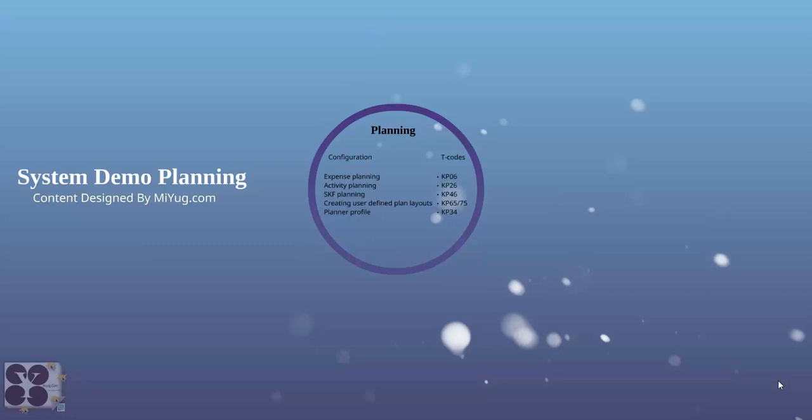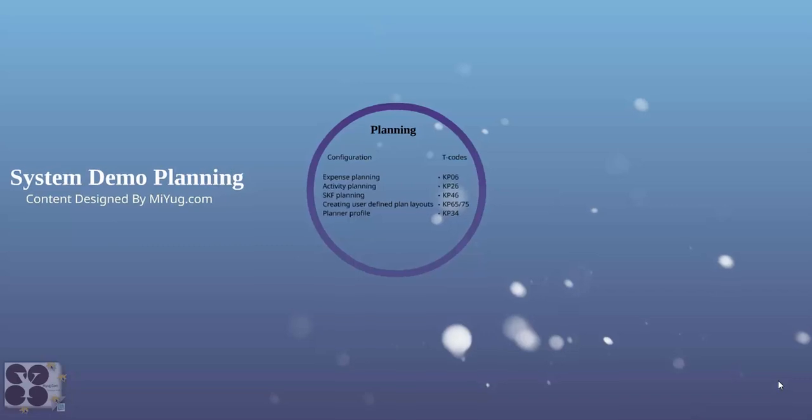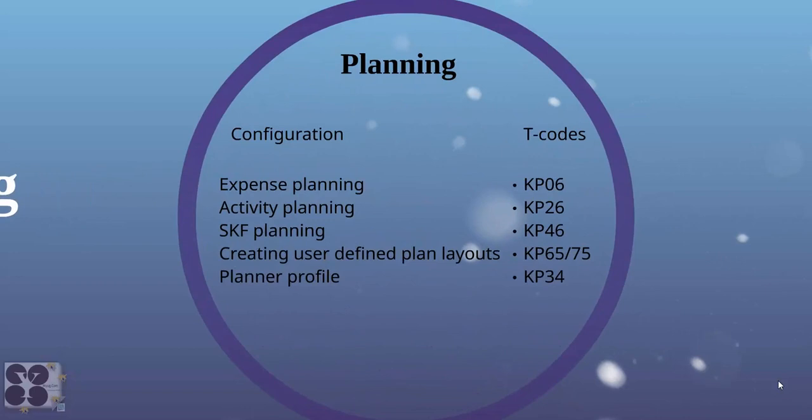Welcome to this lecture system demo for planning. This content is designed by myyug.com. Let's discuss what planning contains, what things are required to do planning, and how we do it in SAP. There are various planning components: expense planning, activity planning, SKF planning, defining plan layouts, and planner profile. These are the planning components we need to configure in SAP to plan systematically with the ERP.